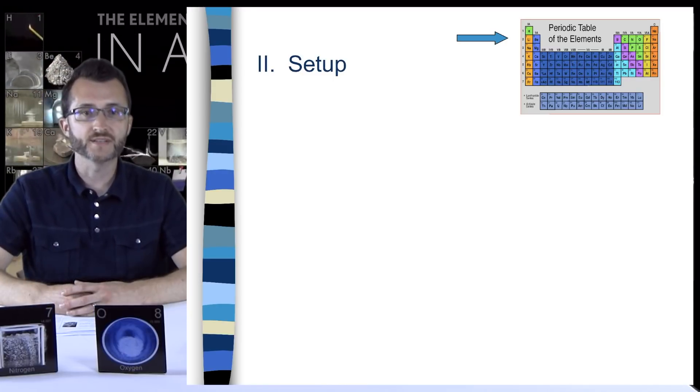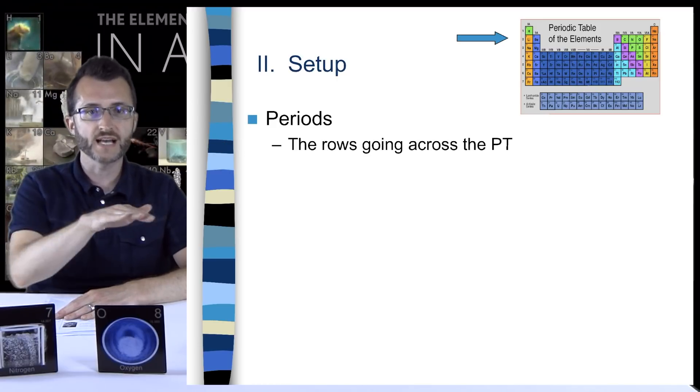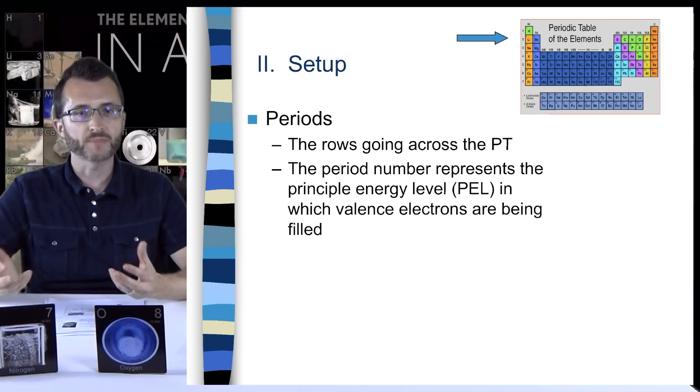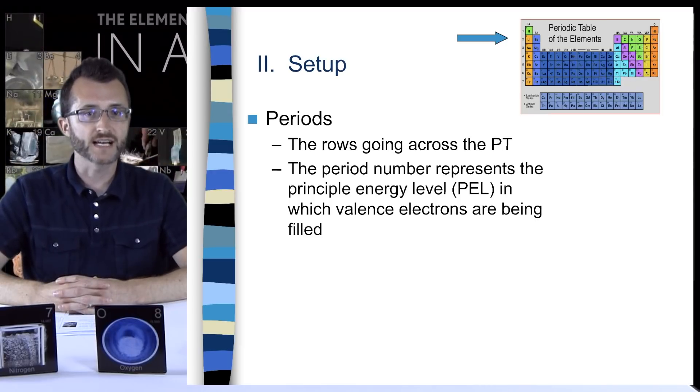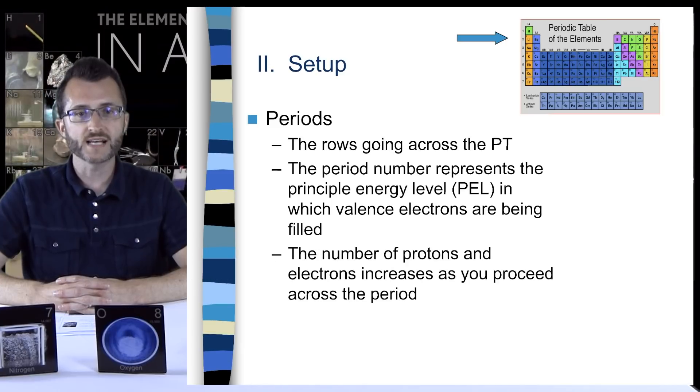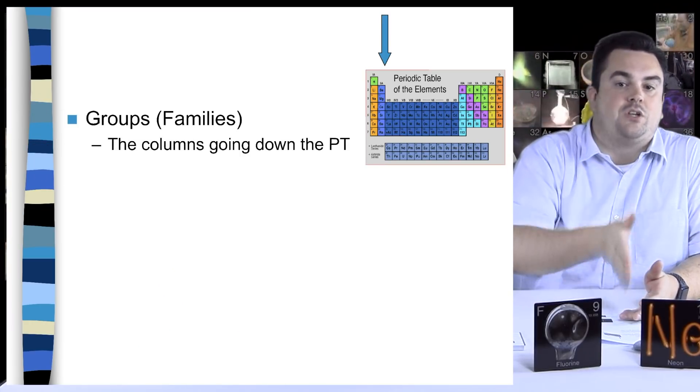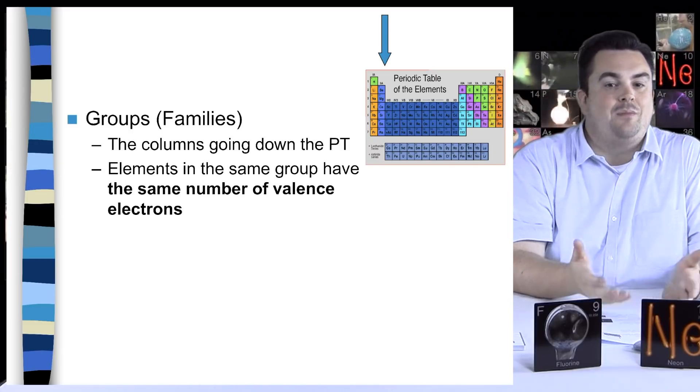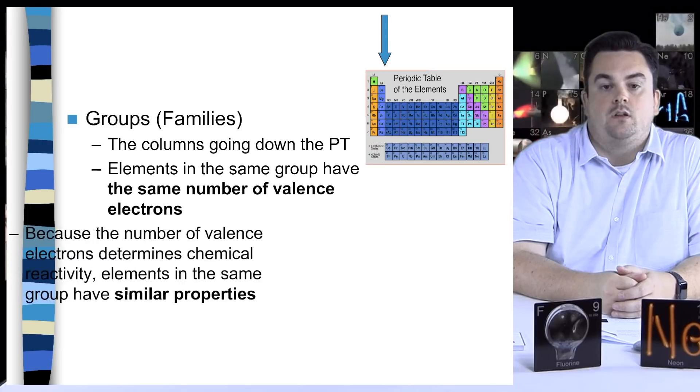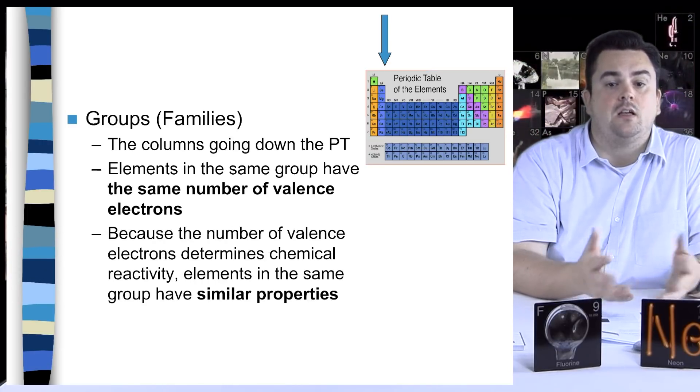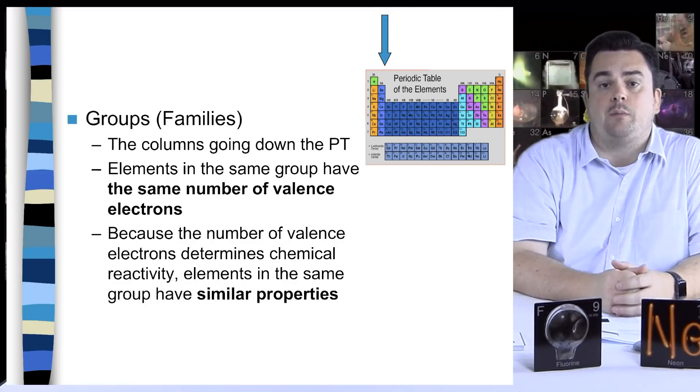Let's talk about the setup of the periodic table. The periods are the rows going across the periodic table. The period number represents the principal energy level, or PEL, in which valence electrons are being filled. The number of protons and electrons also increases as you proceed across the period. Groups or families are the columns going down the periodic table. Elements in the same group have the same number of valence electrons. Because the number of valence electrons determines chemical reactivity, elements in the same group have similar chemical properties. For example, if we look at group one, all of the elements in group one have one valence electron. Because this is the electron that participates in chemical reactions, all the elements in group one react very similarly to one another.